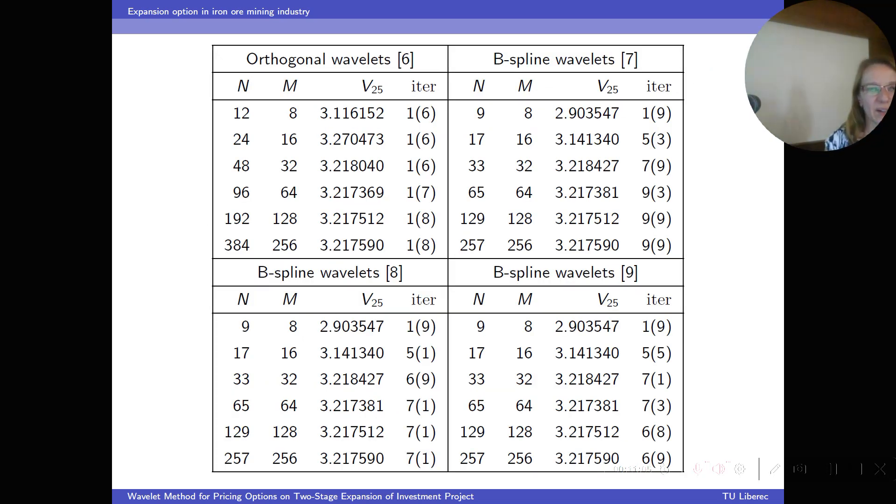This table presents the results for orthogonal wavelets and three types of B-spline wavelets. n is the number of basis functions, m is the number of time steps, V25 is the value of the option at time 0 and price 25, and iter is number of outer and inner GMRES iterations. Studying the convergence of values V25 with respect to n and m, we can say that the method is higher order convergent with respect to both spatial and time variables. The rate of convergence was between 3 and 4 for all the bases. And we can also state that the numbers of iterations are uniformly bounded and that these numbers are small.